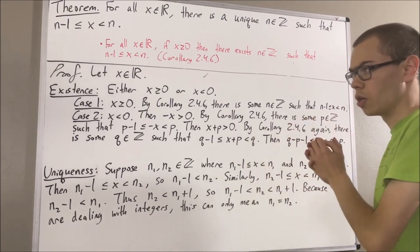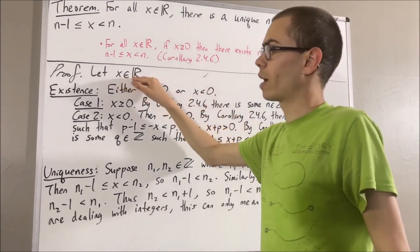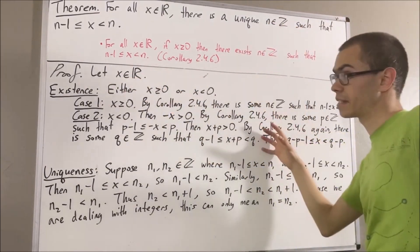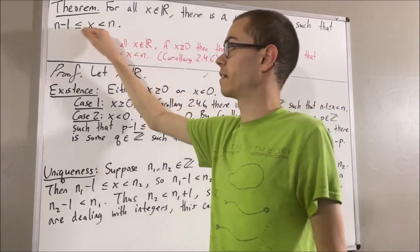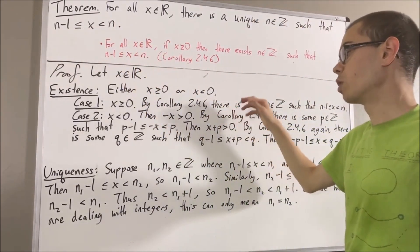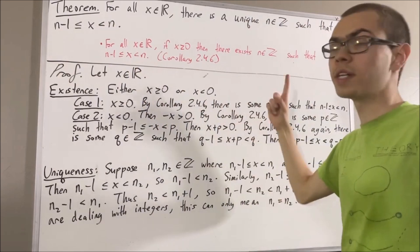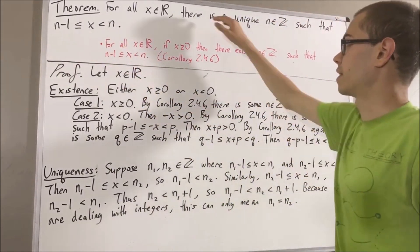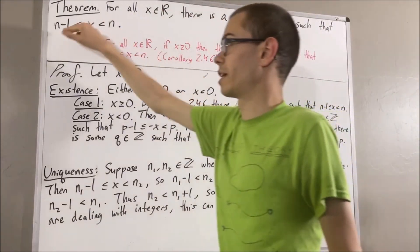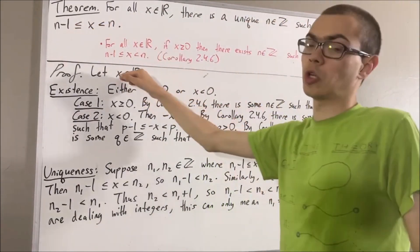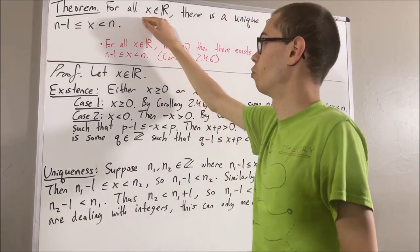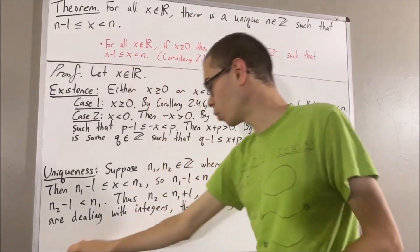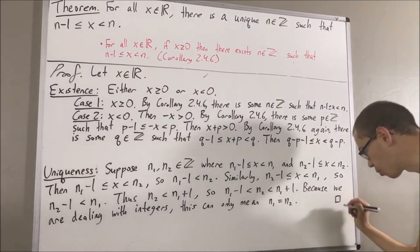Putting this all together: we gave ourselves an arbitrary real number x, first found that there exists an integer satisfying this inequality, and then found that there can only be one such integer. This proves that there is a unique integer satisfying this inequality. Since x was arbitrary, this means for all real numbers x this is true — and that's exactly what we wanted to prove. This completes the proof.